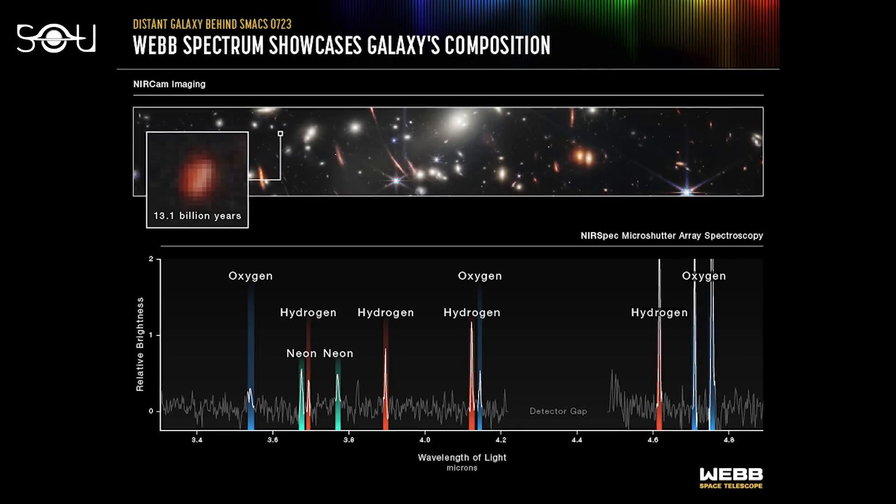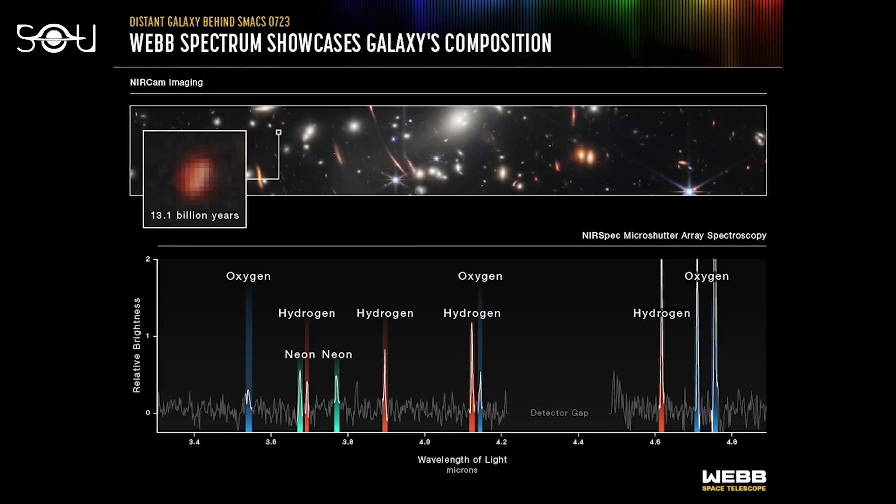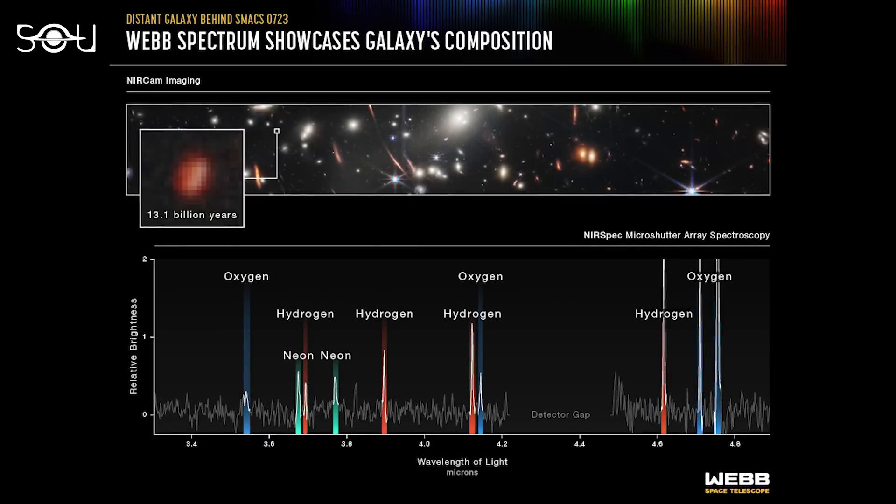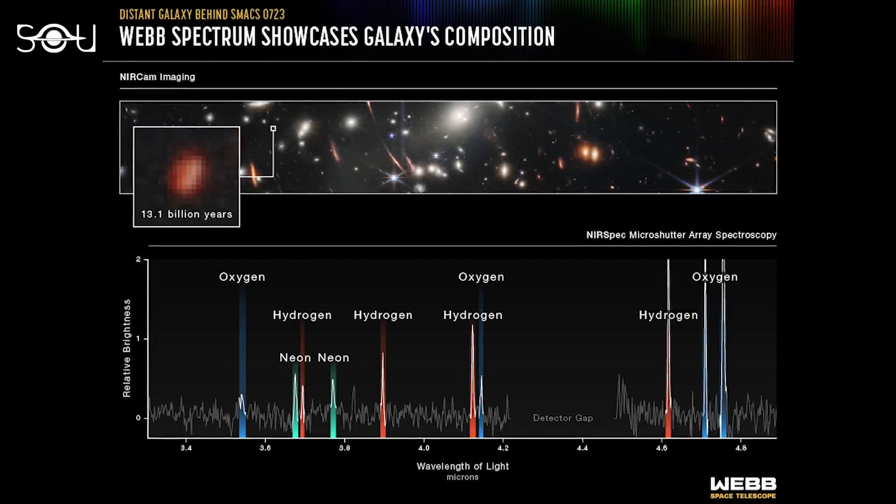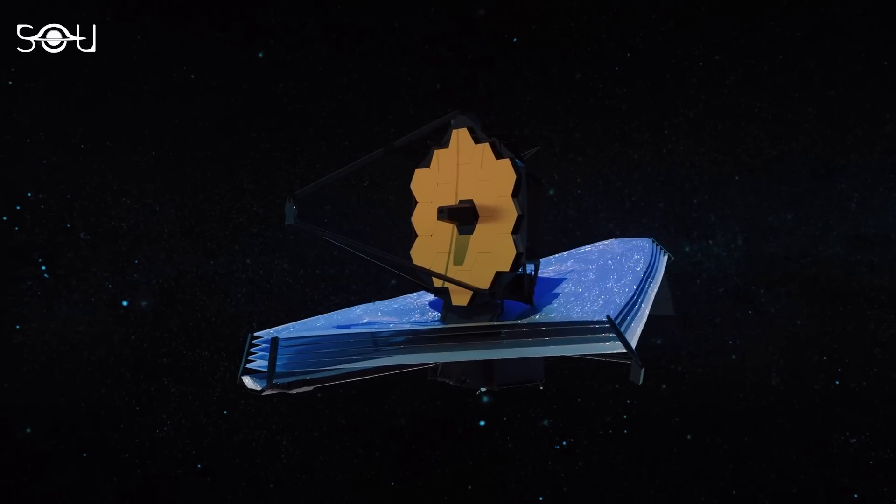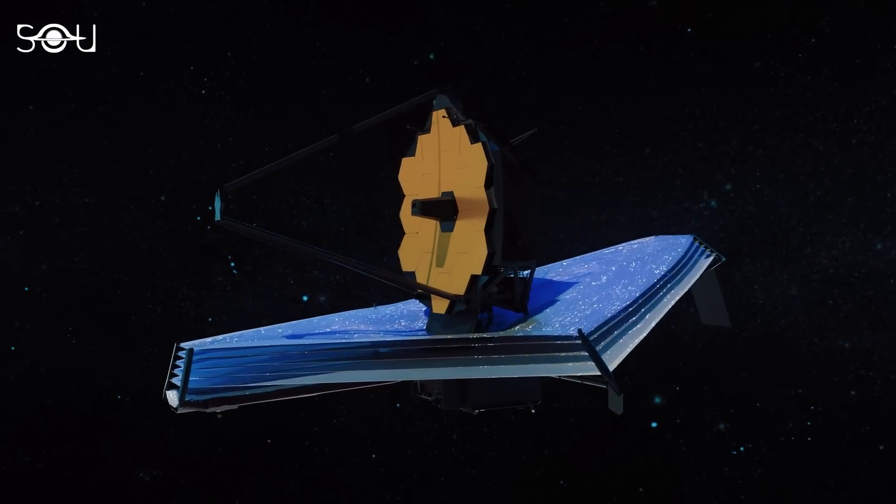And when Webb took the spectra of one such galaxy, it found signatures of oxygen, hydrogen, and neon flourishing there. This makes Webb the first telescope to reveal such details of a galaxy that is more than 13 billion years old, bringing us closer to our origins.